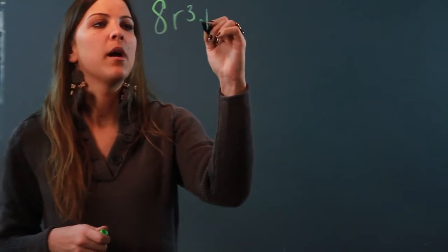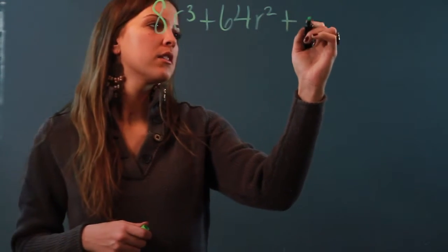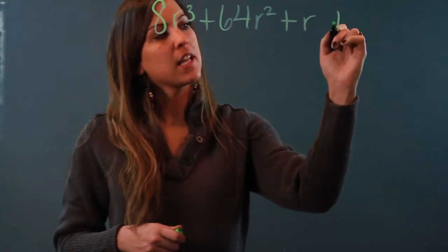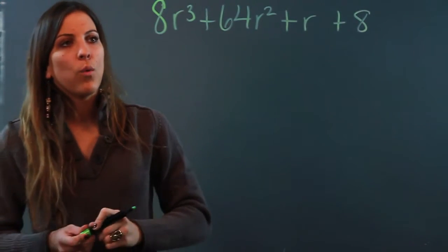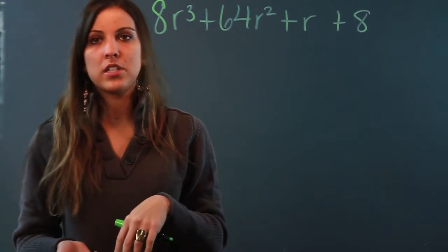So if we have the polynomial 8r cubed plus 64r squared plus r plus 8 and I'm asked to factor this, well I know that I can't do it with GCF because there's going to be no greater GCF than 1.